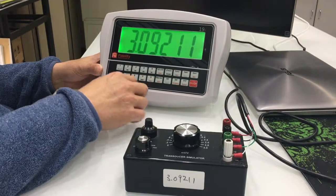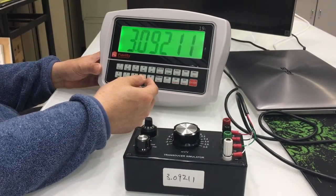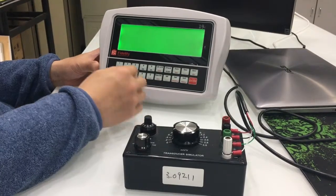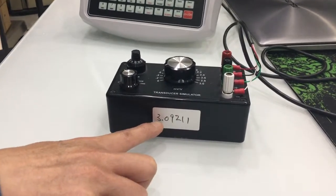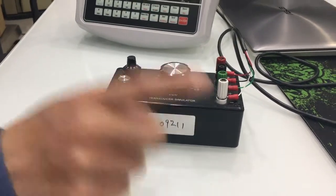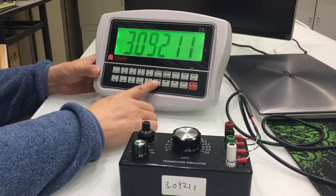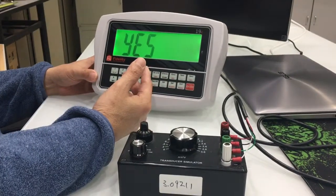Then the next step is to enter the load cell rated output. The output of this simulator is 3.09211, so I will enter the same here and then press enter to continue.